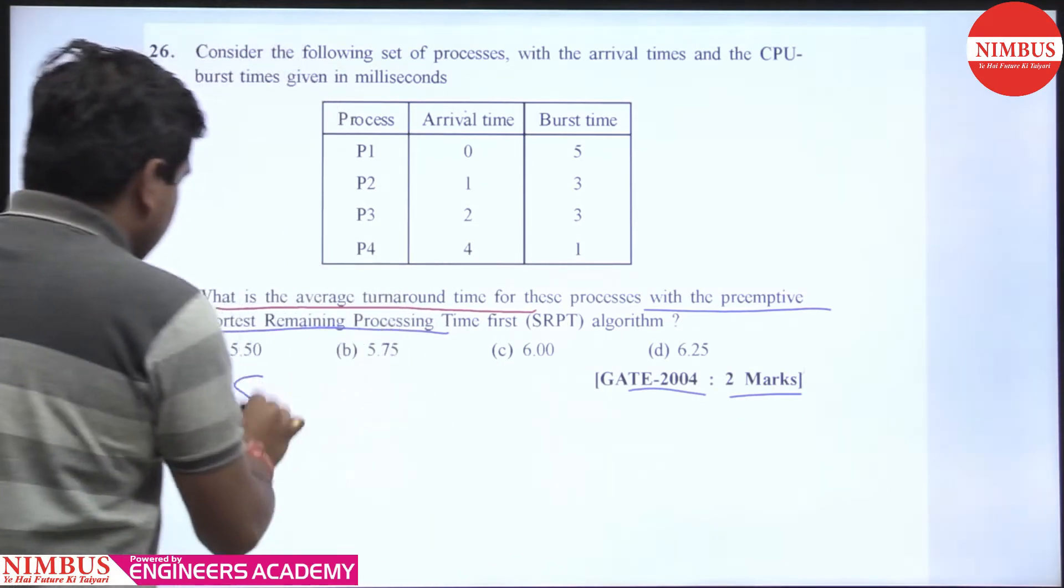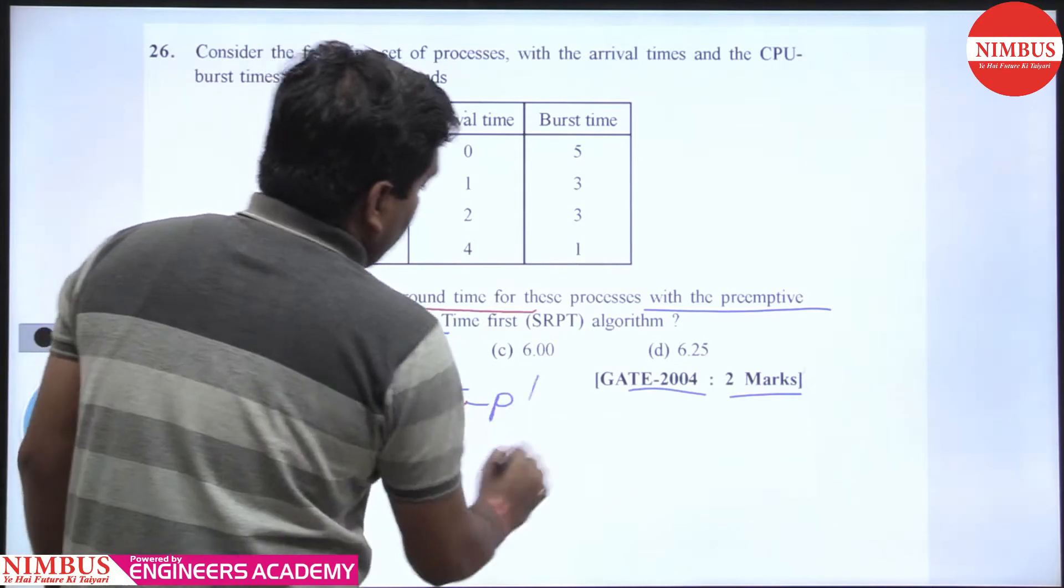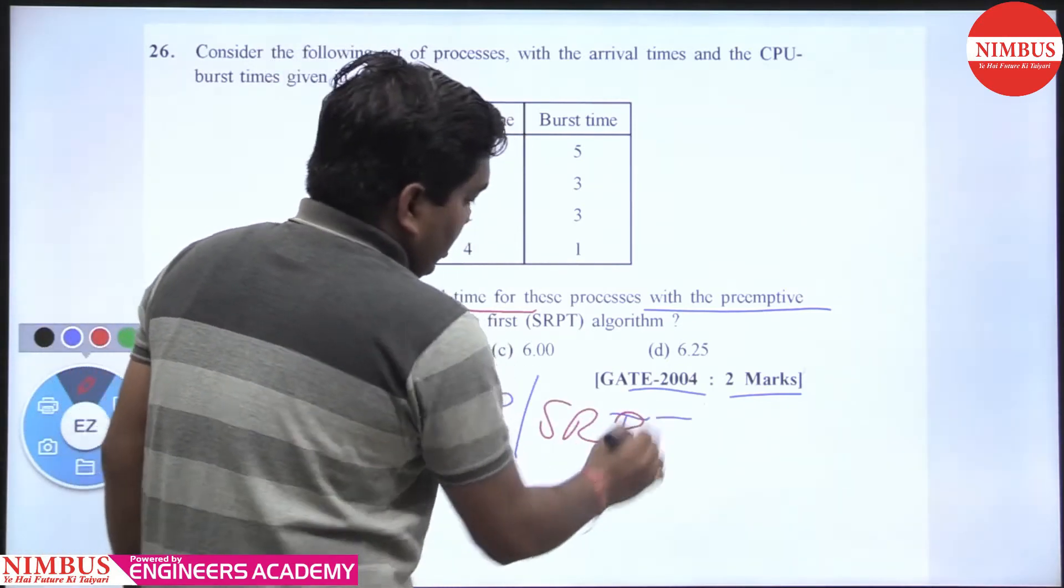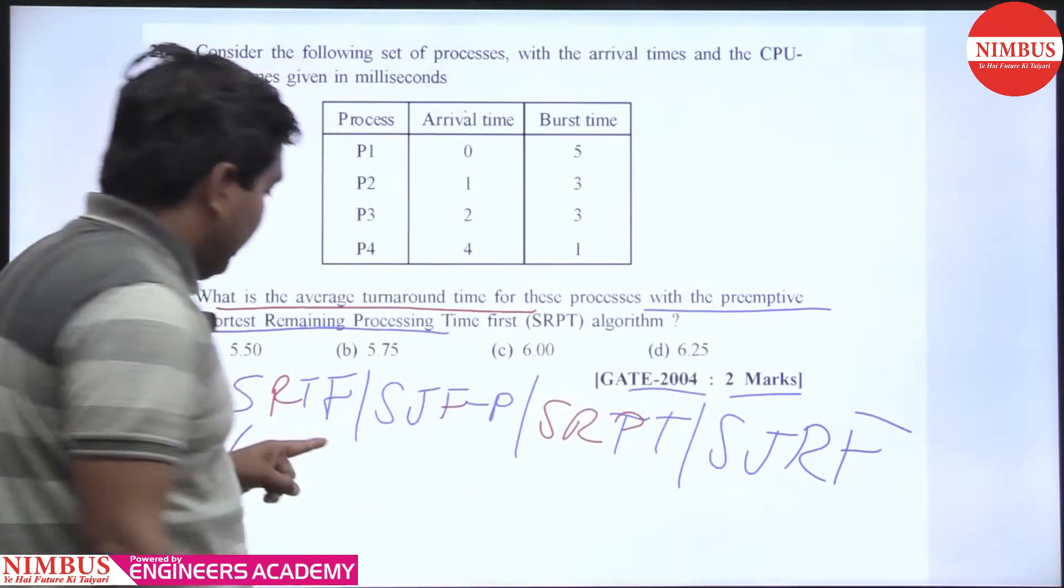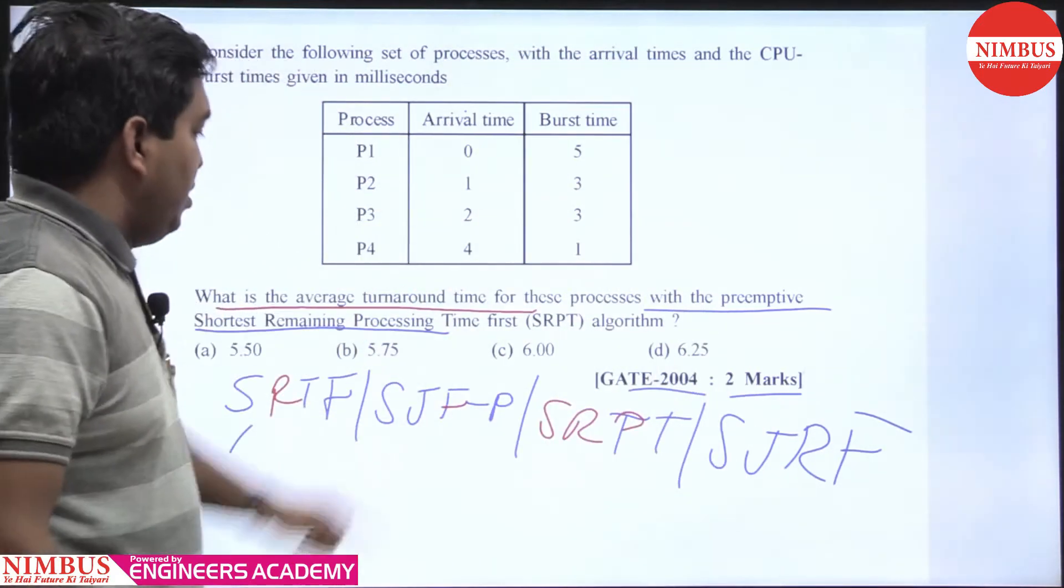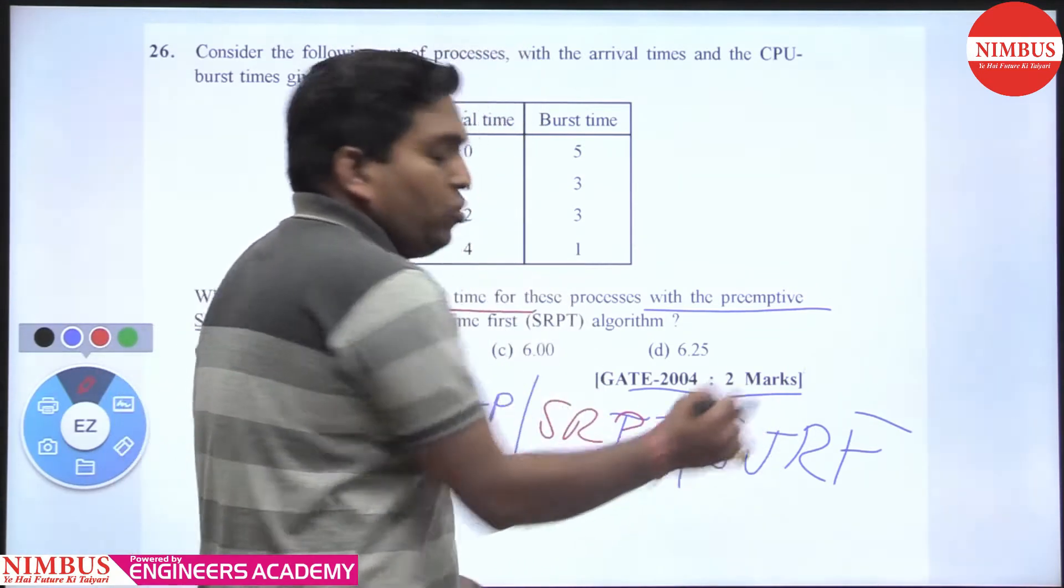This means SRTF, Shortest Remaining Time First. SJF preemptive is also called SRPT and SJRF. These are all the names: Shortest Remaining Time First, Shortest Job First preemptive, Shortest Remaining Processing Time, and Shortest Job Remaining First.